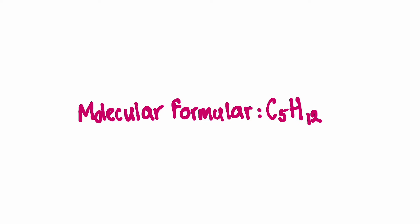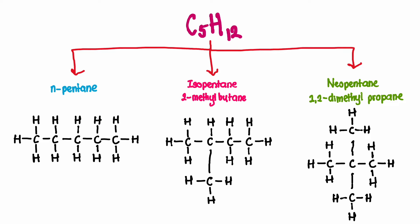Let's take pentane as an example. Its molecular formula is C5H12, but pentanes have three structural isomers: n-pentane, isopentane, and neopentane. Isopentane is also called methylbutane and has one branch. Neopentane is also called dimethylpropane and has two branches. As you can see, the isomers of pentane are different compounds that have the same combination of atoms but are arranged in different ways, resulting in different chemical and/or physical properties.